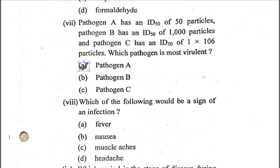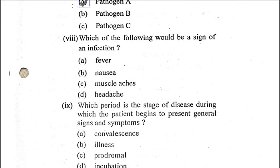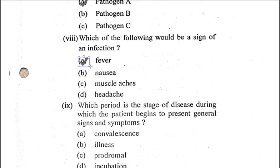Question eight: Which of the following would be a sign of an infection? A) fever, B) nausea, C) muscle aches, D) headache. The correct option is A, fever. When a pathogen enters the host body, it initiates the non-specific defense system, one mechanism of which is increasing body temperature. Gram-negative bacteria have lipid A as part of their cell wall with endotoxic activity; endotoxins release pyrogens which increase the body temperature of the host. So the correct option is fever.